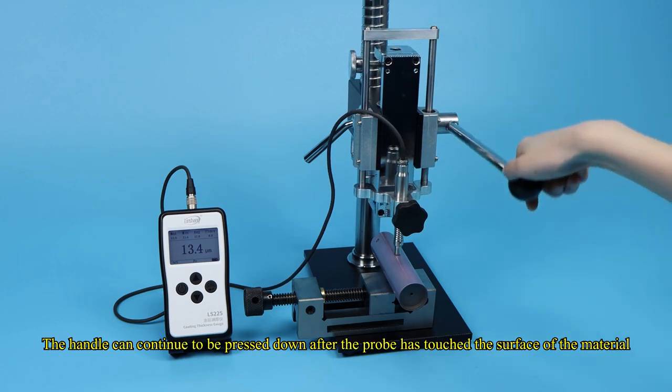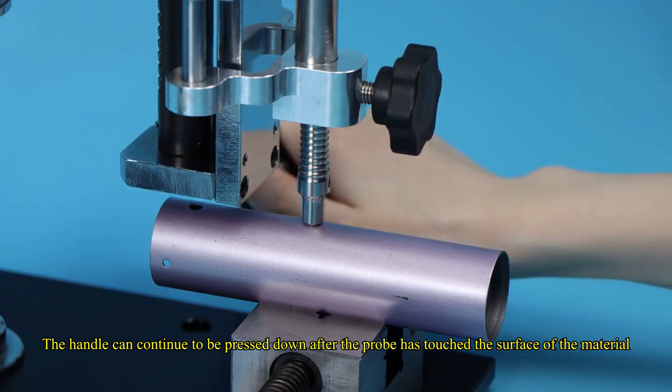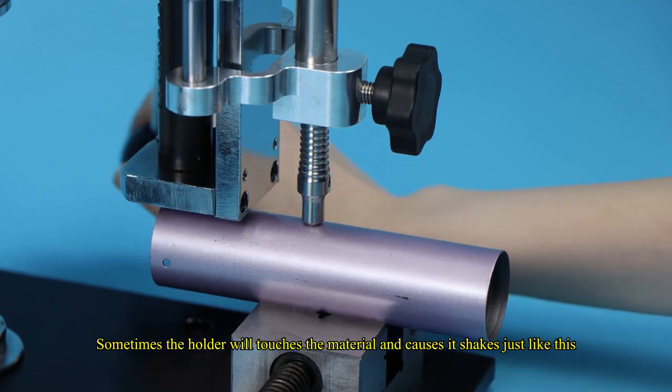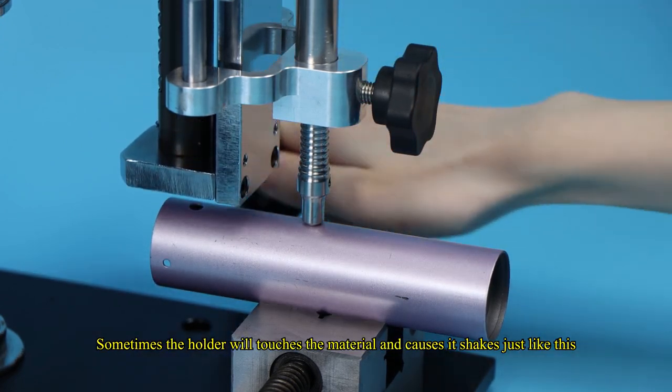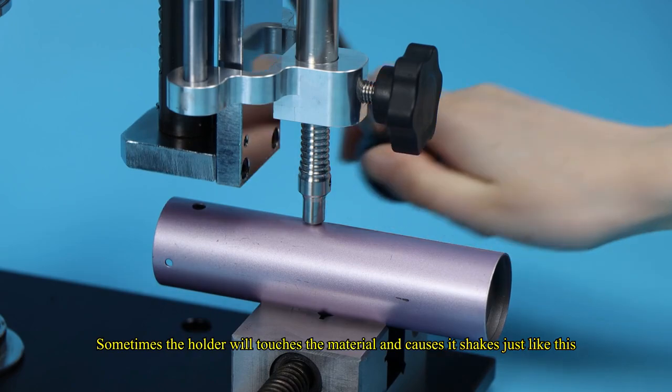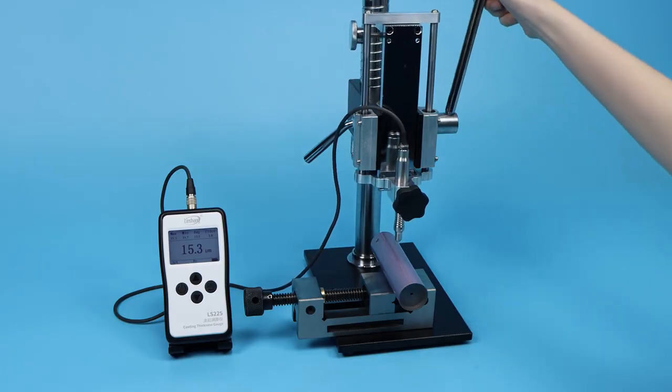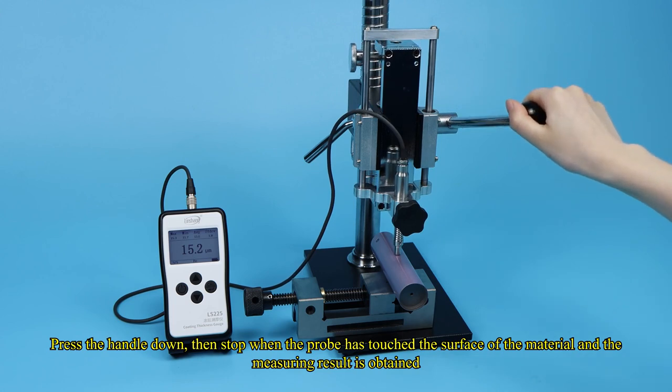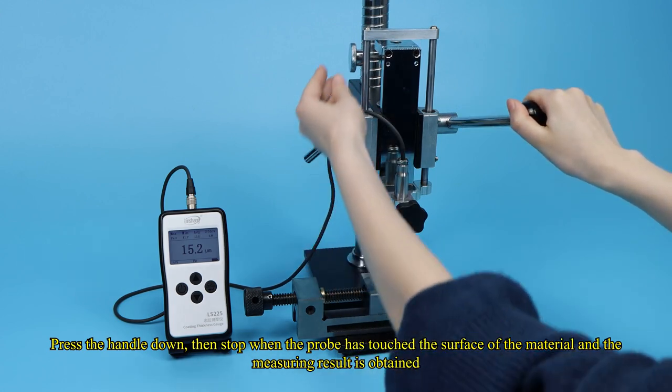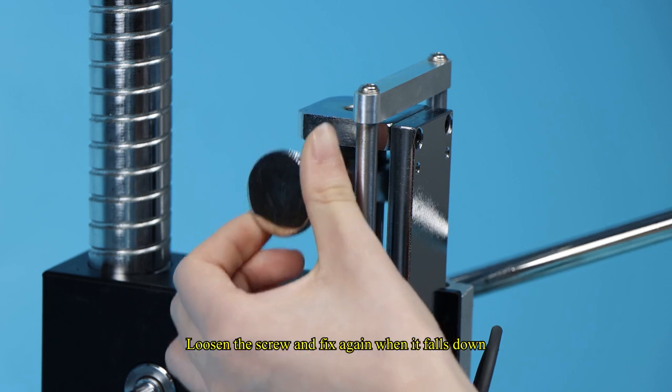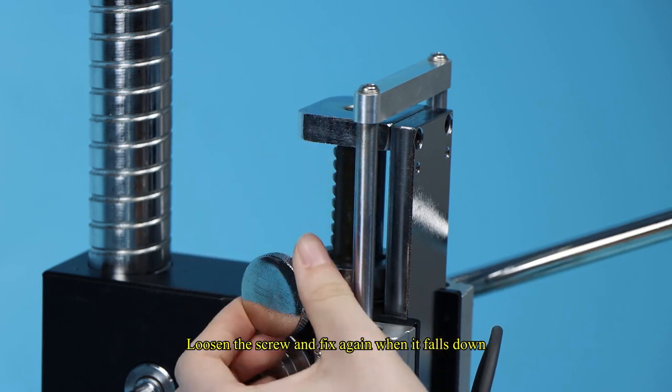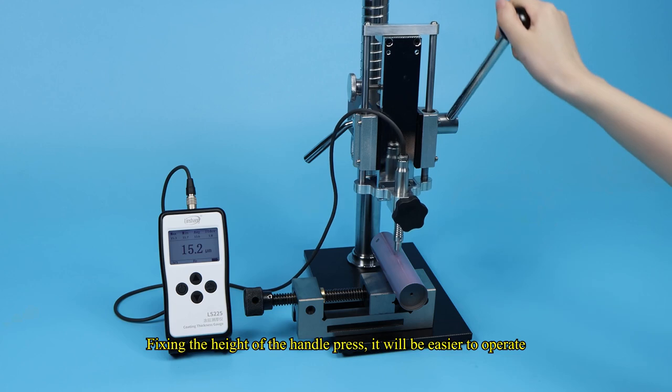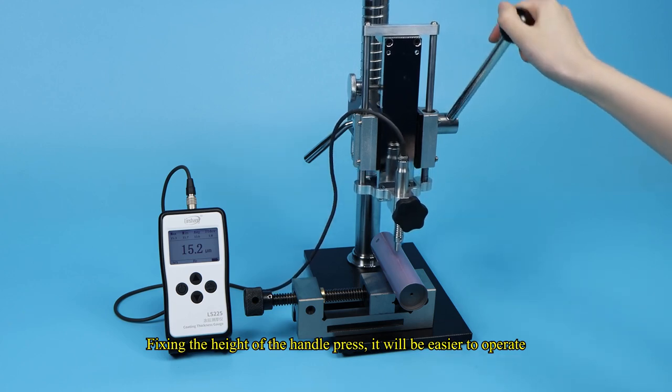The handle can continue to be pressed down after the probe has touched the surface of the material. Sometimes the holder will touch the material and cause it to shake just like this. Press the handle down, then stop when the probe has touched the surface of the material and the measuring result is obtained. Loosen the screw and fix again when it falls down. Fixing the height of the handle press, it will be easier to operate.